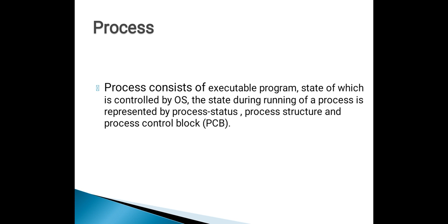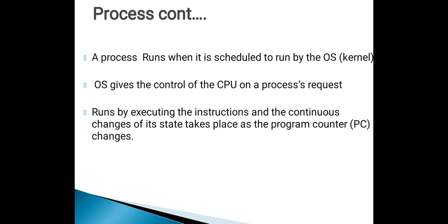Process structure indicates its data, object, and resources. A process runs when it is scheduled to run by an operating system, by executing the instructions, and the continuous changes of its state take place as a program counter changes. On a process request or on a system call, the operating system gives the control of the CPU.